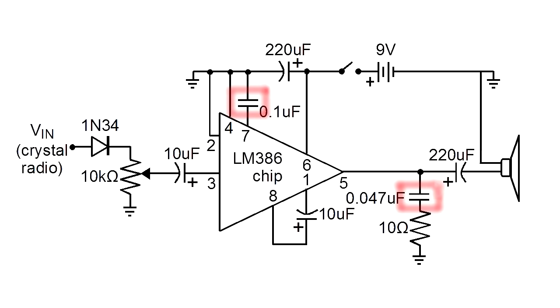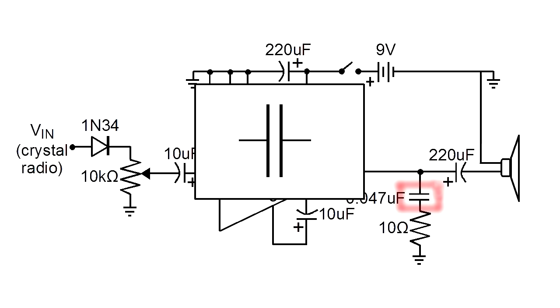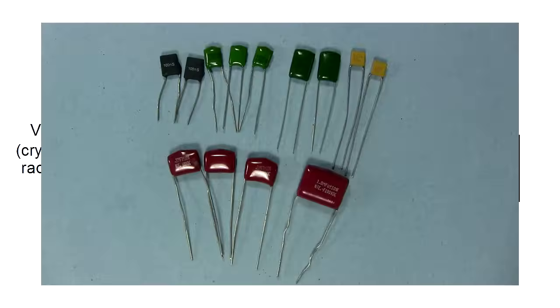But not all capacitors have positive and negative sides. The symbol here is for a non-polarized capacitor, just two straight lines. These capacitors come in many shapes and sizes and don't have any minus signs on them.